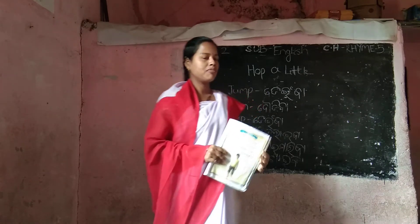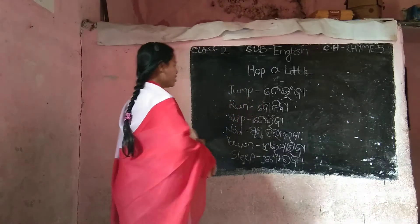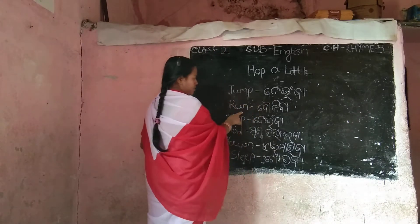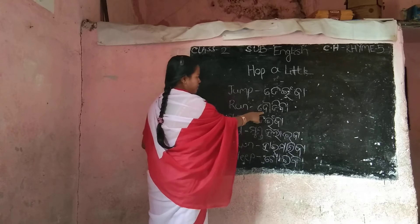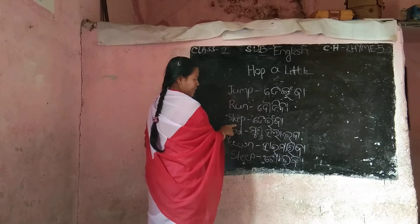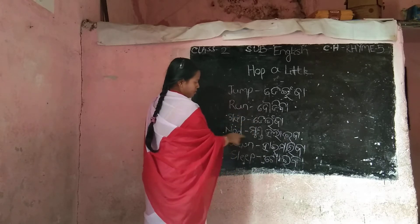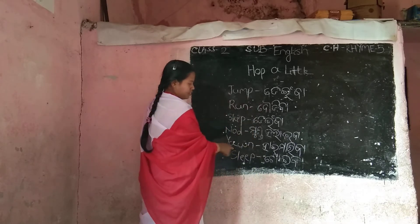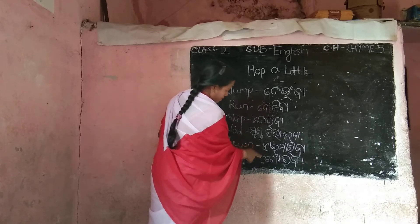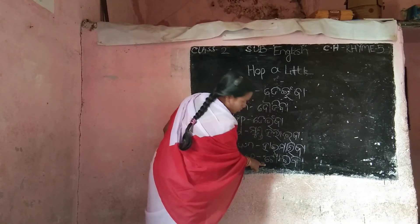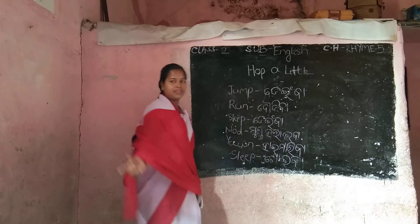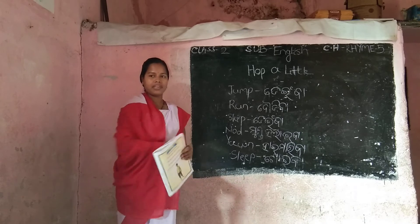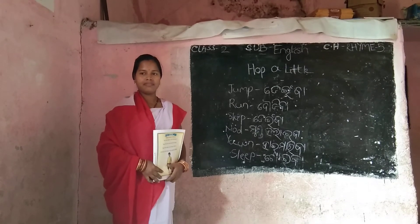So, I am going to teach you a class to English time 5. Jump, say back. Run, say back. Skip, say back. Nod, move a little, run a little, run a little, sleep a little. Thank you children.